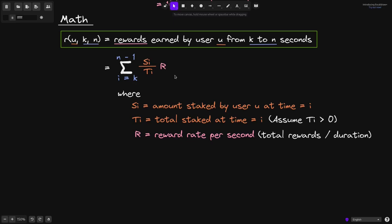What is this equation doing here? Well, for each second from i equals k all the way up to n minus 1, we are calculating the percentage of tokens that is staked by this user.